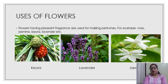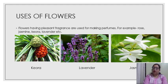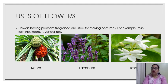Next are the uses of flowers. Some flowers are very good for making perfumes. Flowers like rose, jasmine, keoda, and lavender are very commonly used for this purpose. Here I have given pictures — this is keoda, then lavender, and then jasmine. These flowers and others can be used in the work of making perfumes.